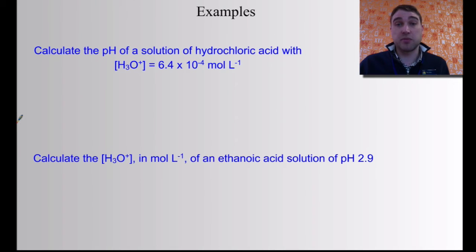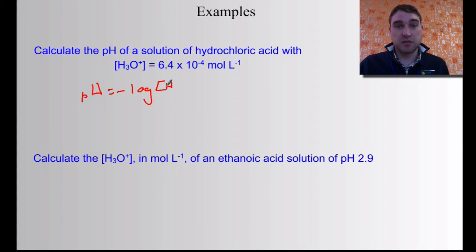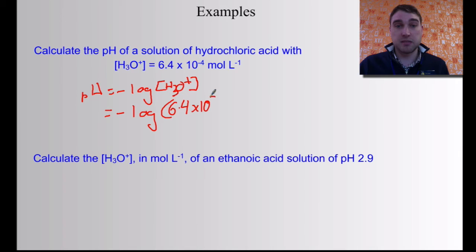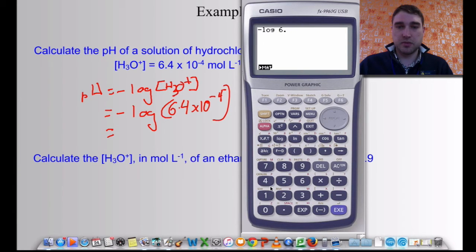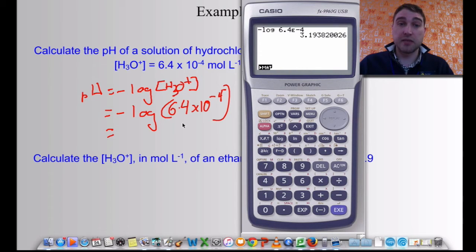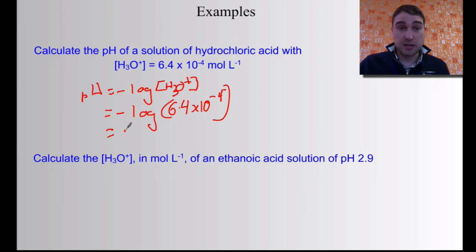Let's do some examples. The first question: calculate the pH of a solution of hydrochloric acid with a concentration of hydronium ions of 6.4 × 10⁻⁴ mol/L. First, write the equation: pH = −log[H₃O⁺]. Substituting in: pH = −log(6.4 × 10⁻⁴). Using the calculator: negative log of 6.4 × 10⁻⁴ equals 3.19. Rounding to two significant figures, the answer is 3.2.